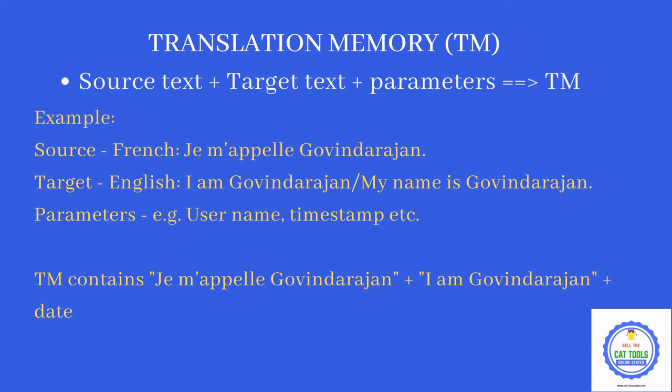What is a translation memory? Source plus target plus parameters forms the translation memory. For example, here we are considering French as a source language and English as a target language. 'Je m'appelle Govindarajan' in French translates to 'I am Govindarajan' or 'My name is Govindarajan' in English. There are parameters like username — for example, 'Govind' — and a timestamp. The simplest definition of a translation memory is your source sentence plus target sentence plus parameters.